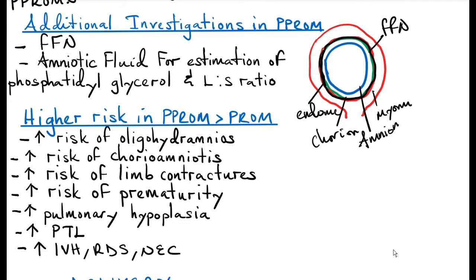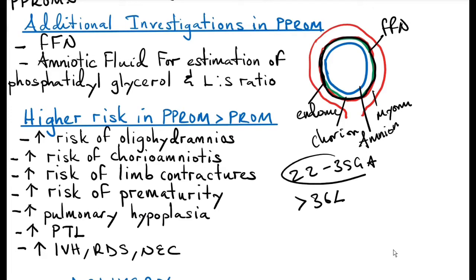Fetal fibronectin is found early in pregnancy, but it is not supposed to be found between 22 to 35 weeks gestational age. It is only found after 36 weeks gestational age in preparation for labor. So if you find fetal fibronectin between this gestational age range, it means there is a risk of preterm labor occurring.